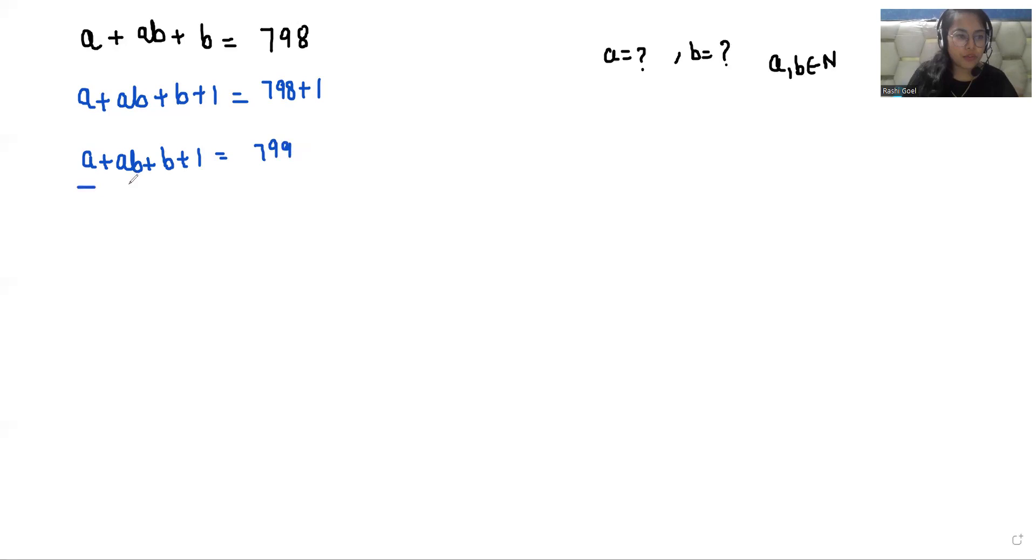Now from the first two terms I can take A as common, so 1 plus B. And from the next two terms I can take 1 as common, so B plus 1 equals 799. So I can write (A plus 1)(B plus 1) equals 799.